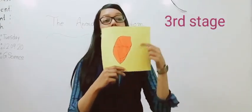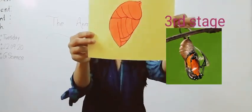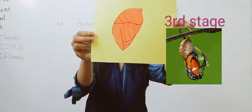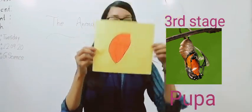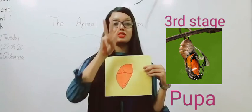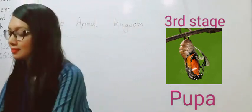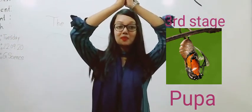Third stage - this chrysalis has a protective layer around itself. And this is called pupa. The third stage is pupa.